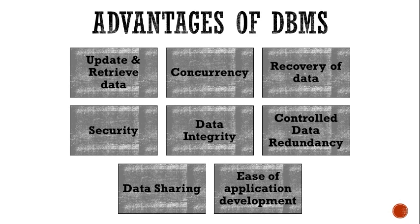What is redundancy? Same data is not being updated or deleted every time — that is managed by DBMS. Redundancy means same data being replicated, and DBMS will remove that directly. Then data sharing — you can share your data with someone else if you want. And ease of application development — however you want it, you can have your DBMS. So, ease of application development.